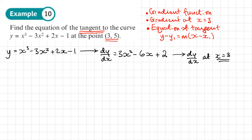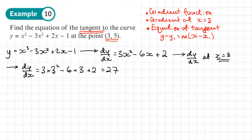We substitute 3 into dy/dx. So that gives us 3 times 3 squared minus 6 times 3 plus 2. That's 3 times 9, which is 27, minus 6 times 3, which is 18. So we're left with 9 plus 2, which gives us 11. This 11 is the gradient of the tangent to the curve when x equals 3.